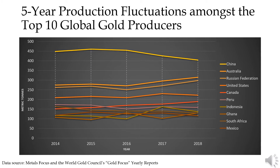After China, Australia is the second largest producer — they're in orange. Russia is the third, in brown. And the United States is the fourth, in a slightly darker shade of orange than Australia.